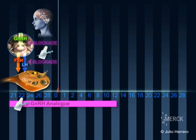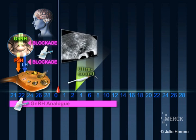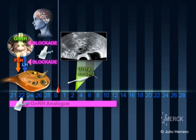Around the time of menstruation, a scan is performed to check the thickening of the endometrium of the uterine cavity and rule out the presence of cysts in the ovaries.